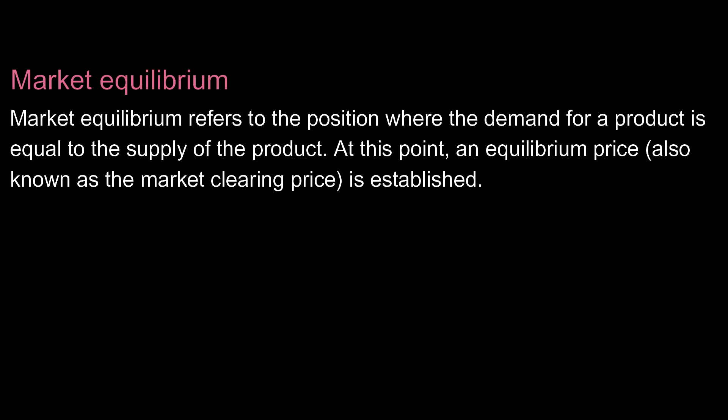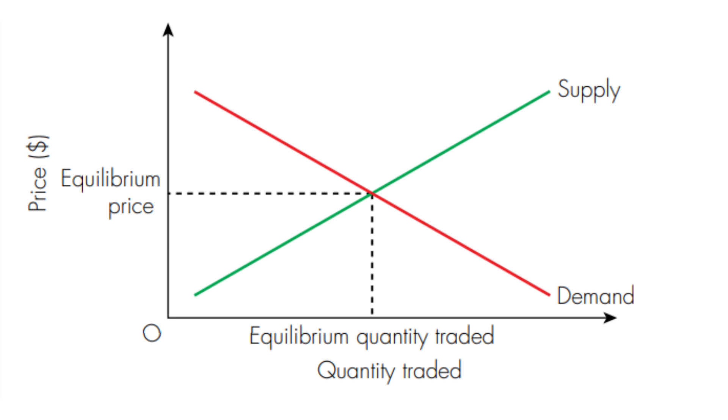Let's now have a look at equilibrium. Market equilibrium refers to the position where the demand for a product is equal to the supply of that product. At this point, an equilibrium price — also known as the market clearing price — is established. As you can see in the diagram, the supply curve and the demand curve meet at a certain point, which is the equilibrium price.